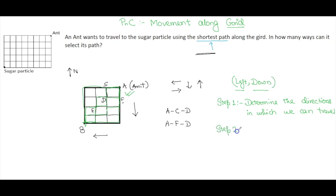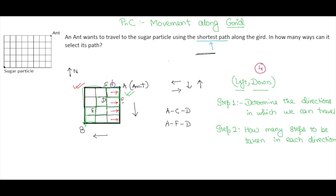Step two is to determine how many steps need to be taken in each direction. In this grid, Amit needs to take four steps in the downward direction and three steps in the leftward (west) direction.